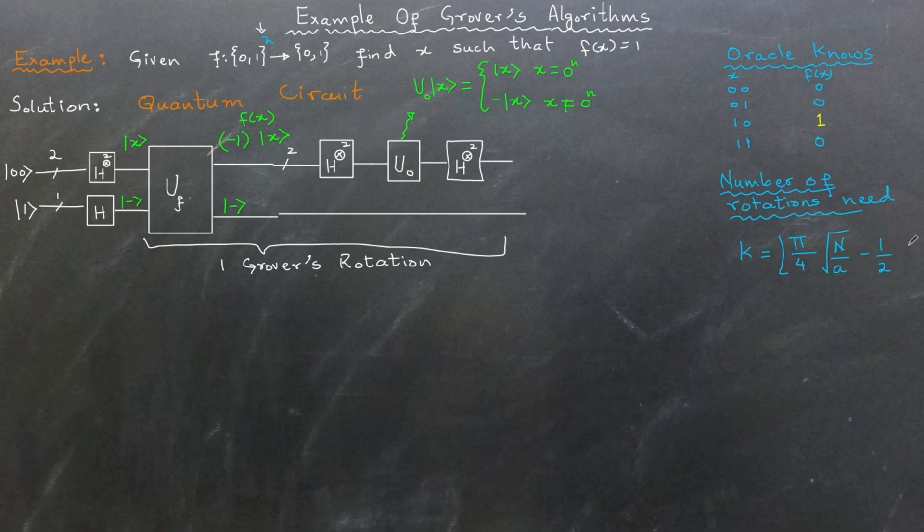In this example, the total number of elements in the domain, capital N, is 4, and the number of solutions, a, is 1 because the function returns true for only one input.